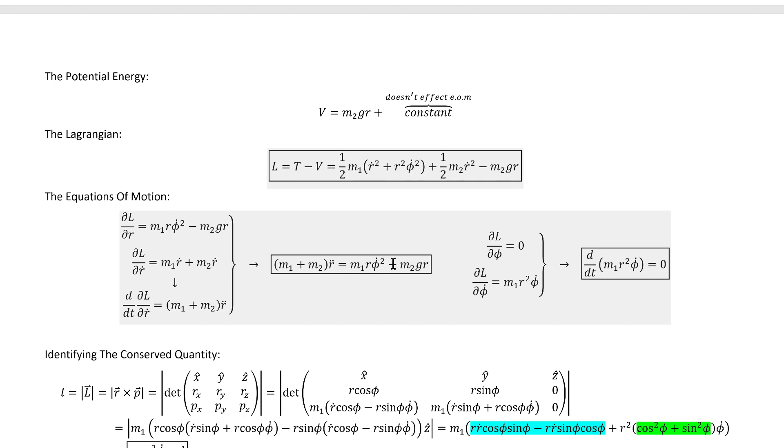The R equation of motion straightforwardly works out to be that. Things start to get a bit more interesting when we calculate the phi equation of motion because we find a conserved quantity.